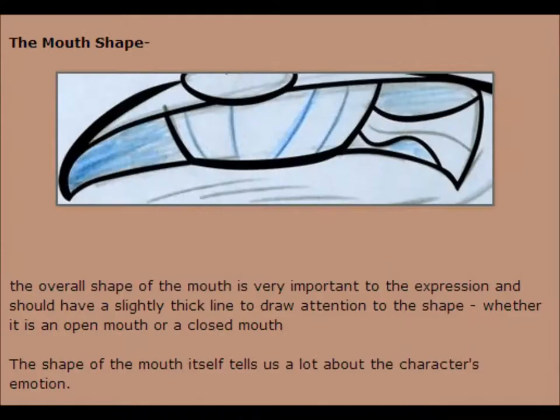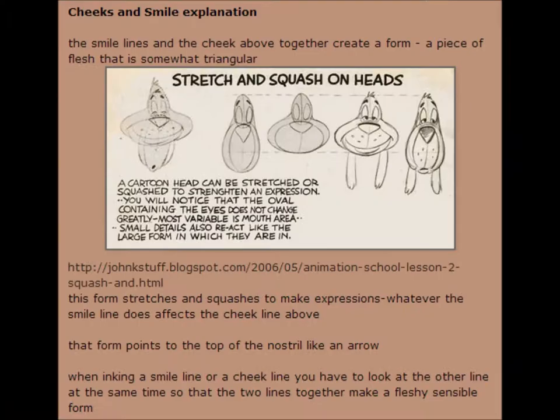Whether it is an open mouth or a closed mouth, the shape of the mouth itself tells us a lot about the character's emotion. The lines at the edges of the mouth shape are very important — I like to make them a bit thicker in the middle, which gives the effect of a shadow. This helps solidify the expression. The smile lines and the cheek above together create a firm piece of flesh that is somewhat triangular. This form stretches and squashes to make expressions; whatever the smile line does affects the cheek line above.